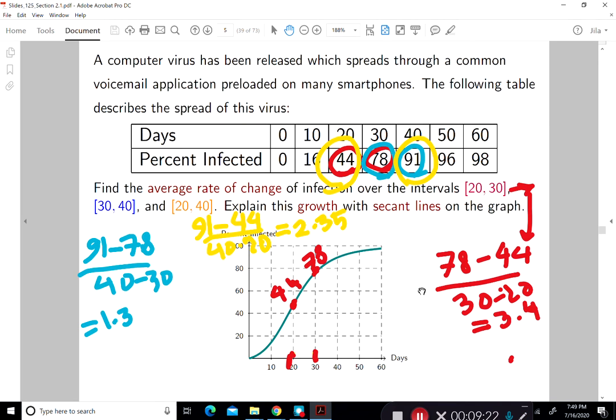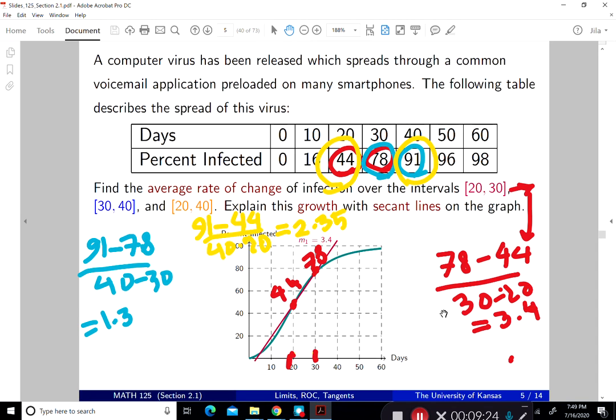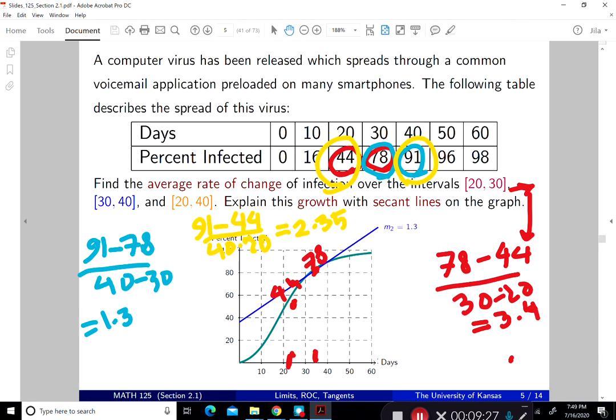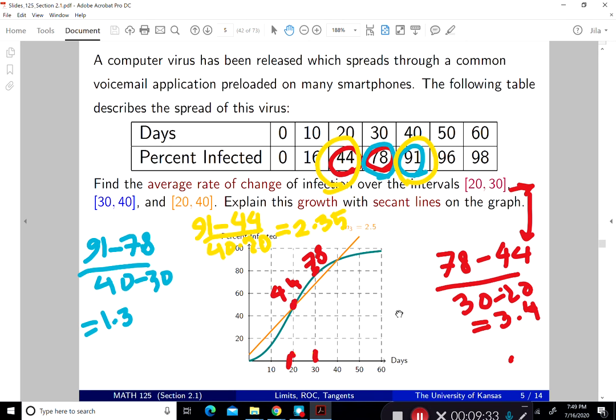And the slope of the first secant line is 3.4. The slope of the second secant line is going to be 1.3. And then the slope of the last secant line is going to be 2.35.